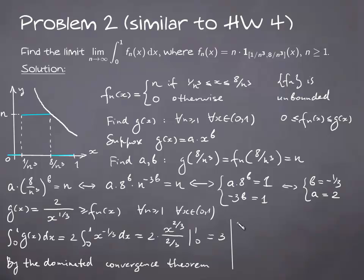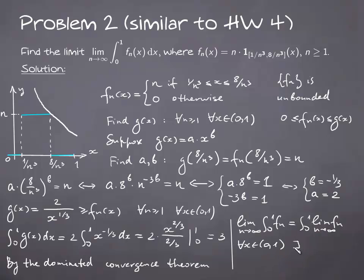We can pass the limit under the integral sign. Let's find the pointwise limit of these functions. Clearly, for every x from the open interval (0, 1), we can find n so that 8/n³ is less than x, just using the Archimedean principle. That means fn(x) converges to 0, so the pointwise limit is 0. Then the integral of 0 is 0, so the answer is 0.